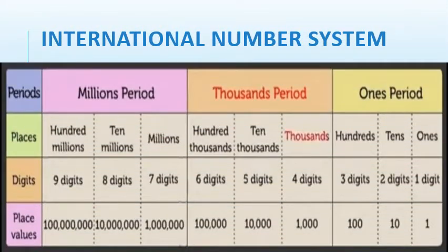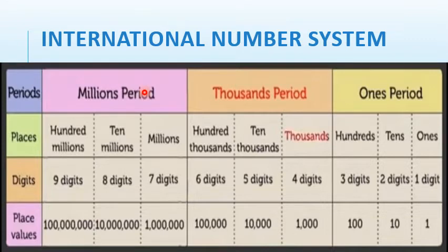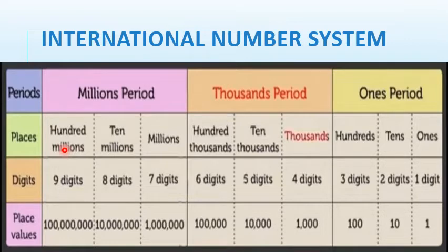Now look at this table. This table shows the periods, places, digits, and place values in this system. Six-digit numbers are placed in the ones and thousands periods. Seven-digit numbers are placed in the ones, thousands, and million periods. Each period consists of three places: the ones period has ones, tens, and hundreds; the thousands period has thousands, ten thousands, and hundred thousands; and the million period has millions, ten millions, and hundred millions. In this session we will learn up to the million period.